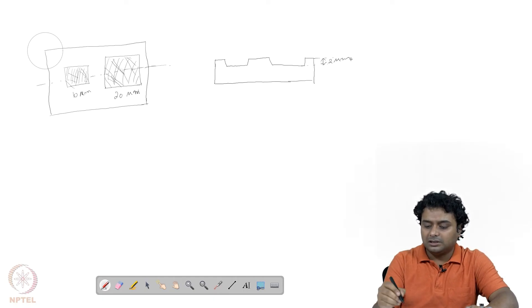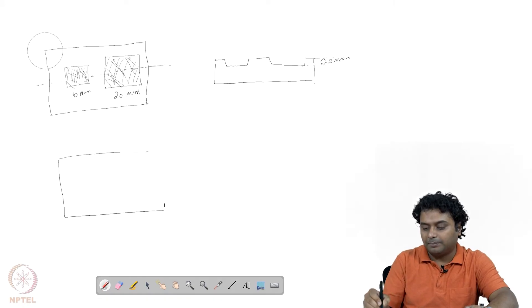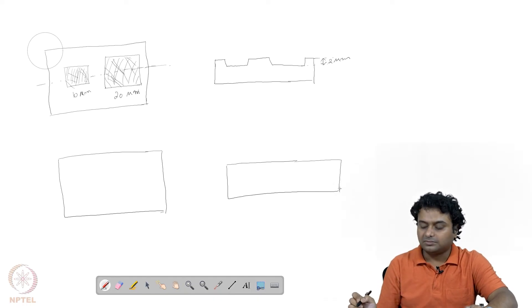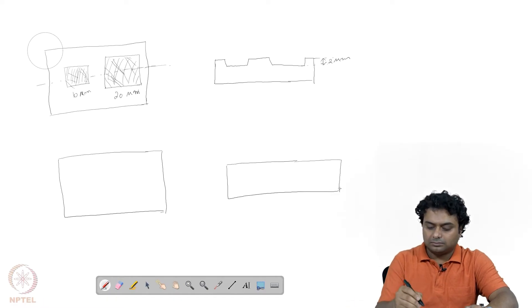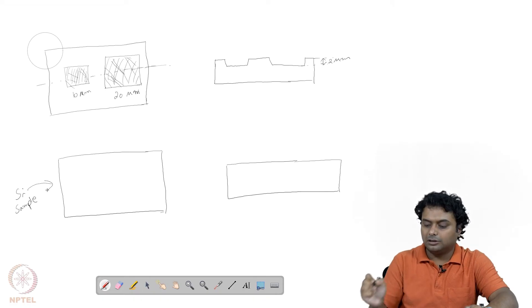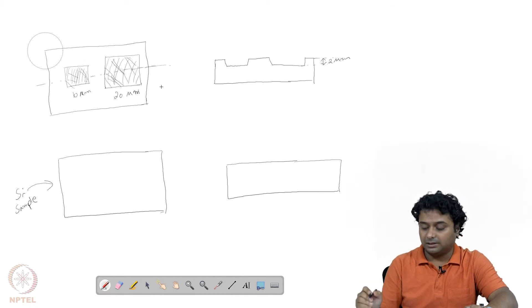We always start with a simple silicon wafer. A simple silicon wafer — how does it look like? It is just like this: this is our silicon wafer, our silicon sample or silicon substrate. We start with that and we will show step by step how we can achieve this desired pattern.